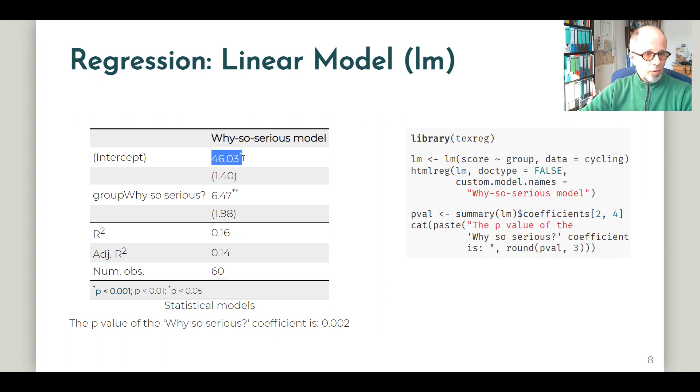We can also find the average value or the mean value of the serious group in the intercept. So that's the mean value for the group encoded 0 on the group variable, 46 points. And then we have the coefficient for the why so serious group. And we can interpret this in terms of the dependent variable scores. So the mean value for the why so serious group is by about 6.5 points higher than for the serious group. And that leads us to exactly the same mean value that we saw before, 52.2 points for the why so serious group. So again, the regression model or linear model confirms what we found out with the t-test. We get the same results, even if the displays are a little bit different.